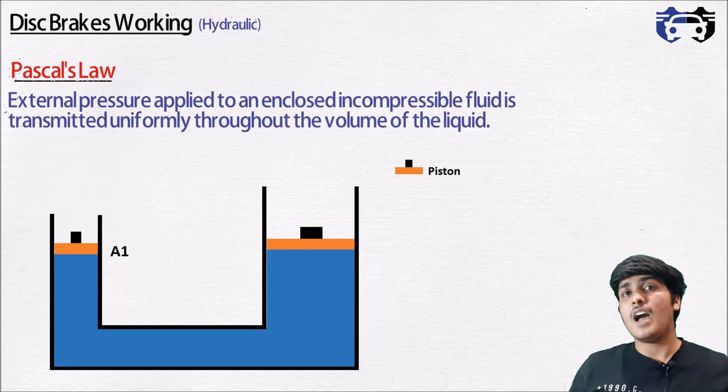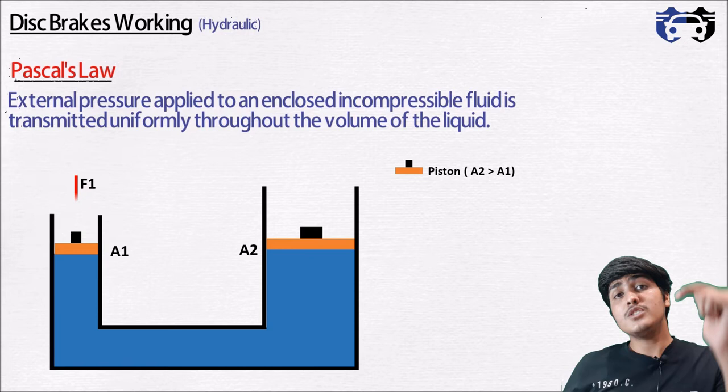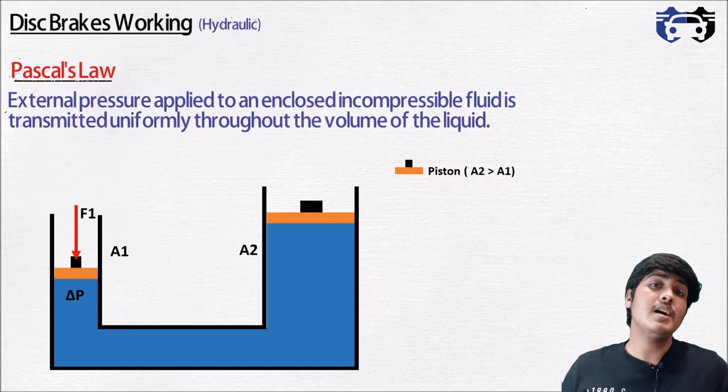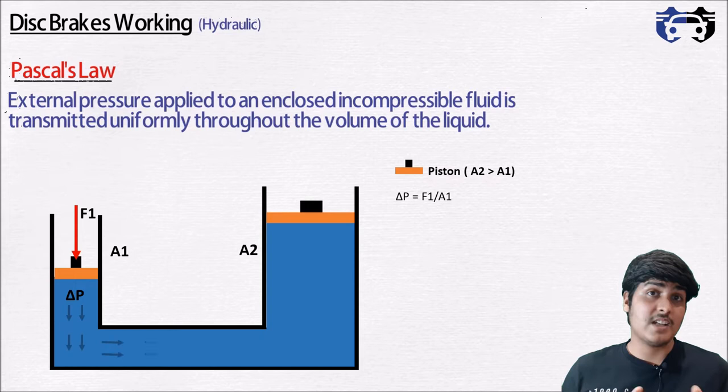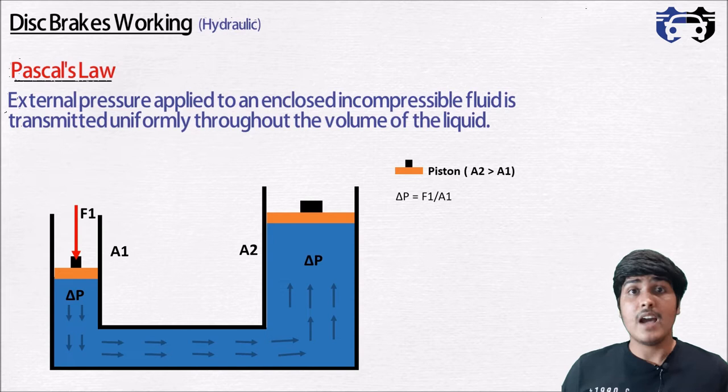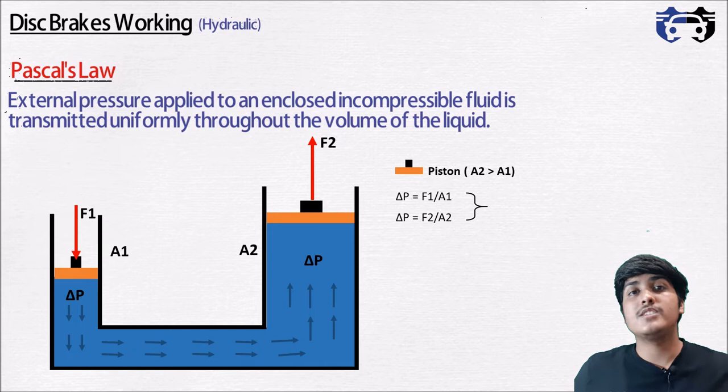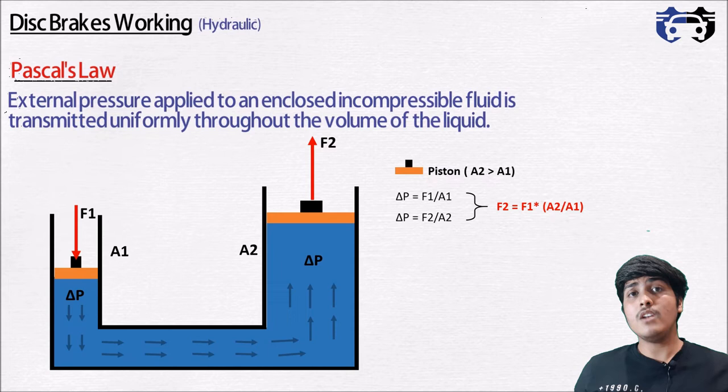In simple words, suppose we have a simple hydraulic press with a piston area of A1 on one side and A2 on the other side, where A2 is greater than A1. Now if a force F1 is applied at piston 1, it will lead to a change in pressure at piston 1 given by ΔP = F1 / A1. According to Pascal's Law, this change in pressure transmits uniformly throughout the volume of the liquid and we get the same change in pressure ΔP at piston 2. So ΔP = F2 / A2, which gives us F2 = F1 × (A2 / A1).